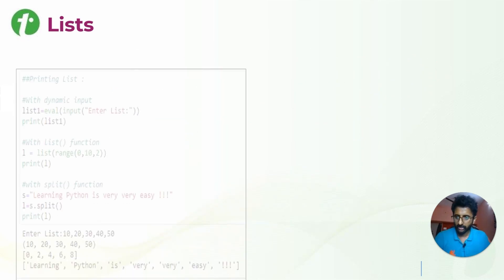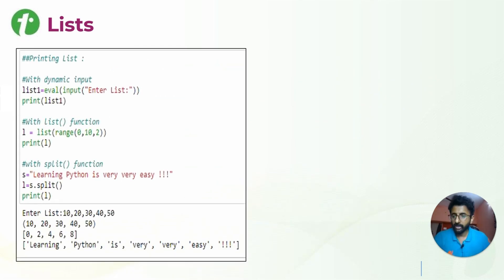For example, what are the ways to print the list? First, you can take the input from the user. We know we can ask the user to give input using the input function and enter the list. Whenever you are doing this, you can just add one, two, three - all the elements.